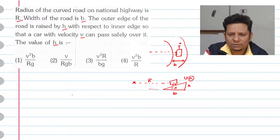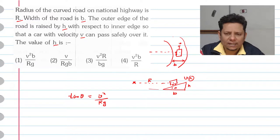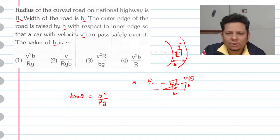Now, in this case, we use the relation tan theta, which is the banking angle, will be equal to V squared divided by Rg. That is a standard result.